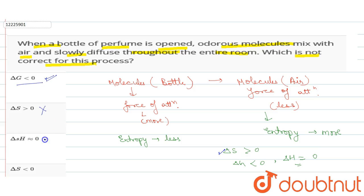So what is wrong? Delta S is greater than zero is correct. The last option states delta S is less than zero, delta S is negative. But delta S is actually positive, so that's wrong.